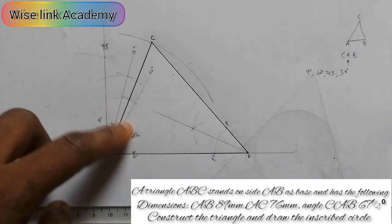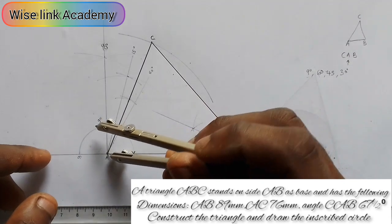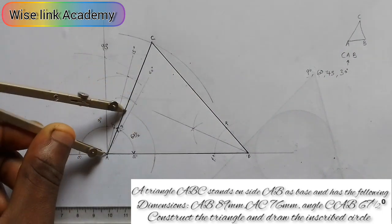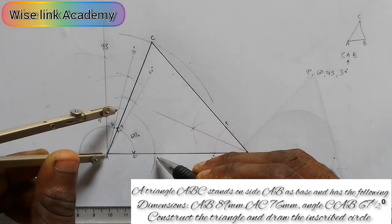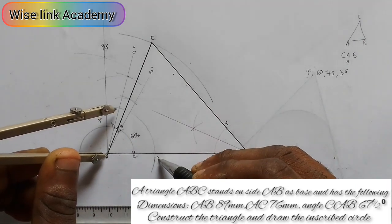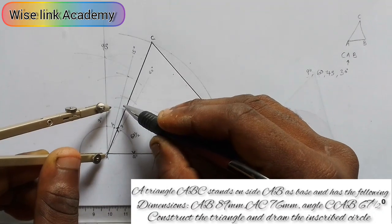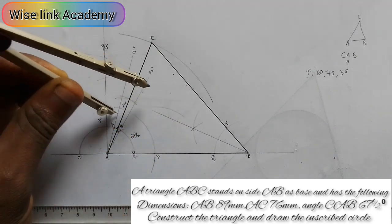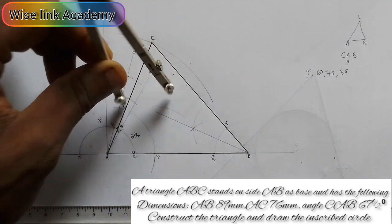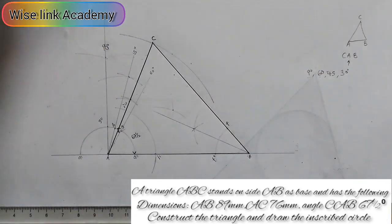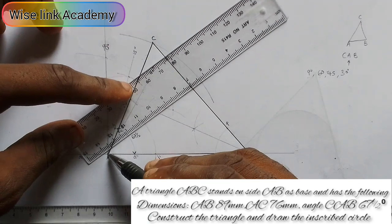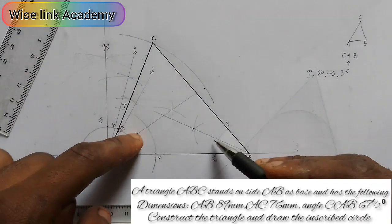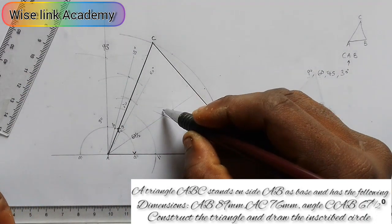My next task is to bisect angle A as well. I draw any radius of my choice, calling the intersection points I prime and I prime prime. At I prime, strike an arc; at I prime prime, cut the arc. Where the arc meets, I draw a faint line from that point through point A. Where these two bisector lines meet is point P.